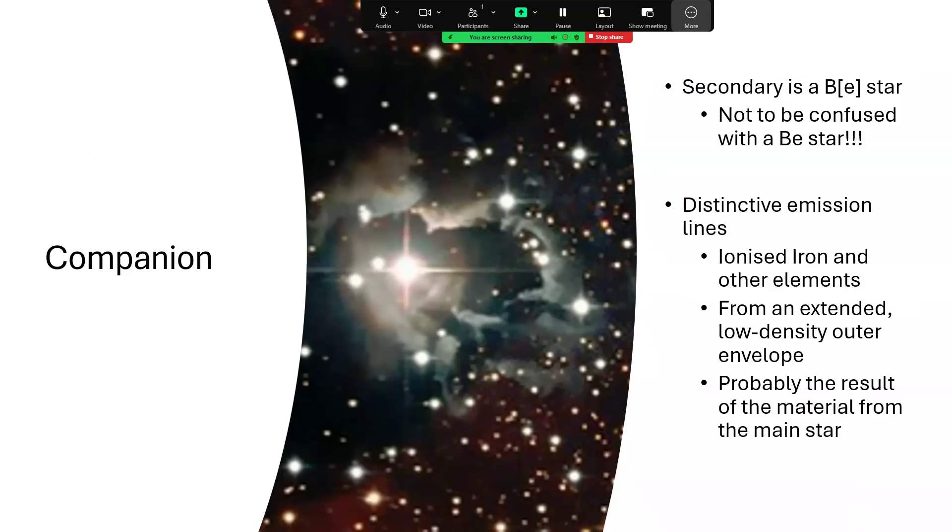So the companion is a B-brackets-E class star, which is not to be confused with a B-E star. And that's another whole story about the different classifications. So the B-brackets-E class have distinctive emission lines of things like iron and other elements. And these are coming from their outer low-density envelopes. And it's probably the result of material having been pulled over from the companion star that's now a yellow hypergiant.